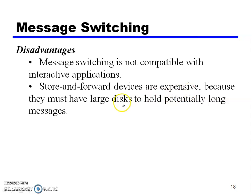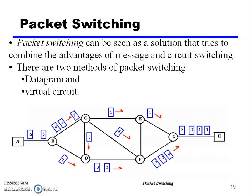A disadvantage is that nodes must have large disks to hold messages, making message switching expensive because store and forward technology requires sufficient memory storage. So this is message switching, which is used for chatting and email transmission.